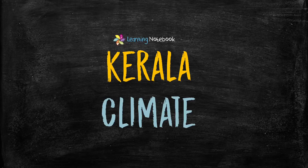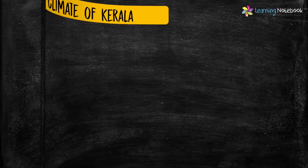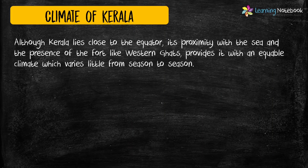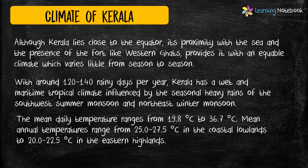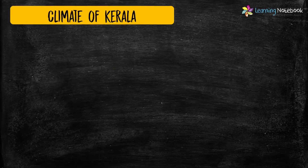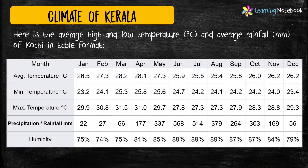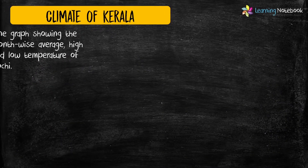Now let's see how you can take ideas from the climate of Kerala for your Maths Art Integrated project. Here, we are going to depict the climate of Kochi, which is considered as the financial, commercial, and industrial capital of Kerala.